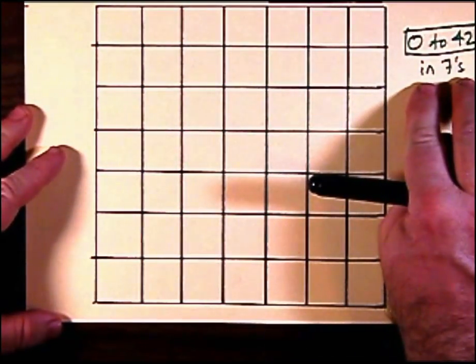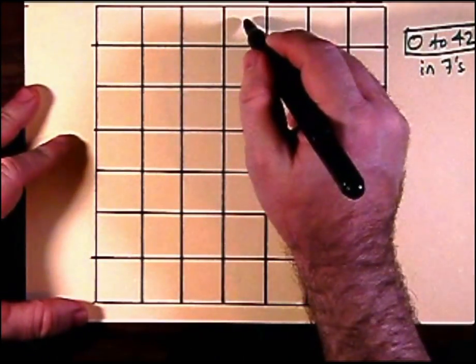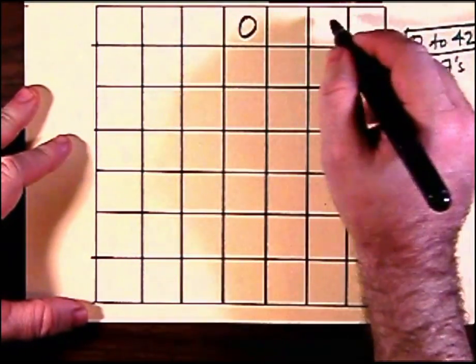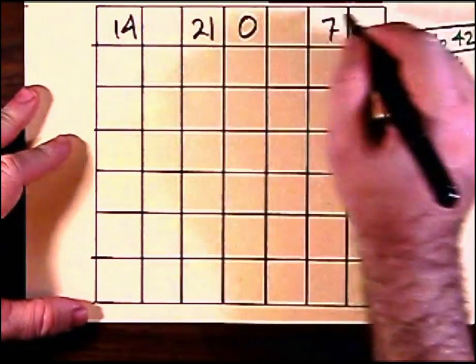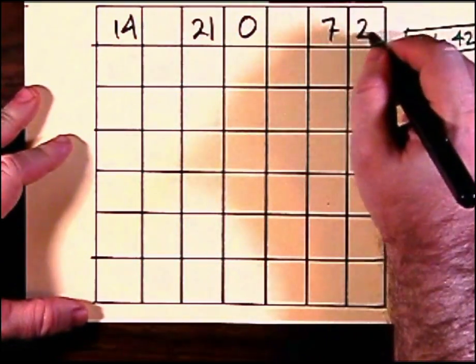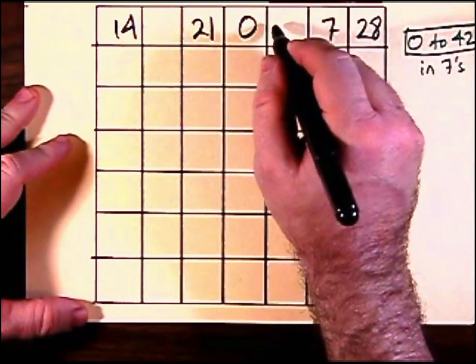And this is the number 0 to 42 in increments of 7. So 0, 7, 14, 21, and so on up to 42 are the numbers to be laid out in increments of 7. So 1, and that is 35, and there is 42.